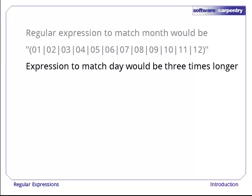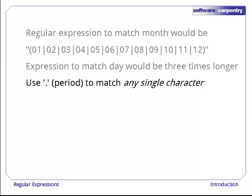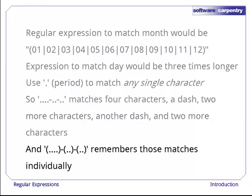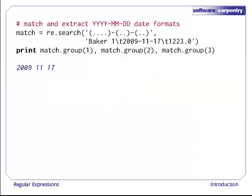Well, in a regular expression you can use dot, the period character, to match any single character. So the expression dot dot dot dash dot dot dash dot dot matches any four characters, exactly four characters, followed by a dash, followed by two more characters, followed by another dash, followed by two more characters. And if we put each set of dots in parentheses, we should get out three groups recording the year, month, and day every time there's a successful match. Let's test that out. Here we're calling re.search with the pattern we just described and the first record from our data. And we print out match.group of one, two, and three. Sure enough, we get 2009, 11, and 17 just as we wanted. Try doing that with substring searches.